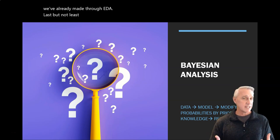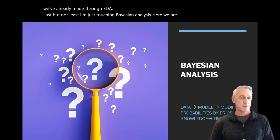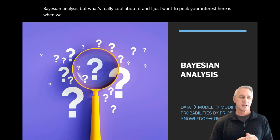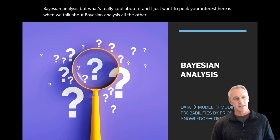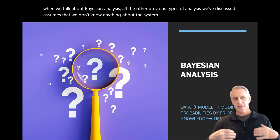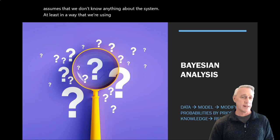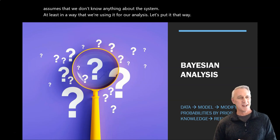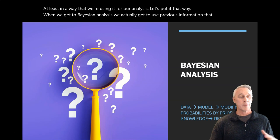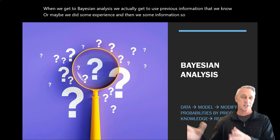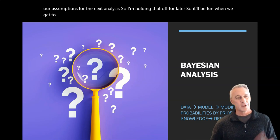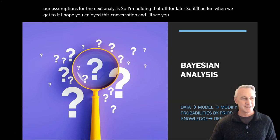Last but not least, I'm just touching Bayesian analysis here. We are going to do a full unit on Bayesian analysis. But what's really cool about it, and I just want to pique your interest here, is when we talk about Bayesian analysis, all the other previous types of analysis we've discussed assumes that we don't know anything about the system, at least in a way that we're using it for our analysis. Let's put it that way. When we get to Bayesian analysis, we actually get to use previous information that we know, or maybe we did some experience, and then we know some information, so that then changes our assumptions for the next analysis. So I'm holding that off for later, so it'll be fun when we get to it. I hope you enjoyed this conversation, and I'll see you next time in class. Take care.